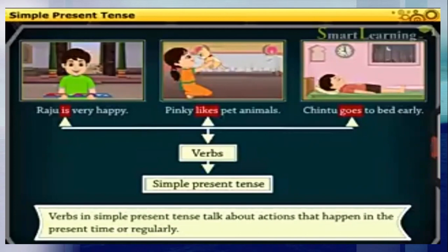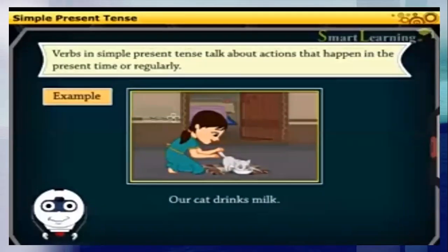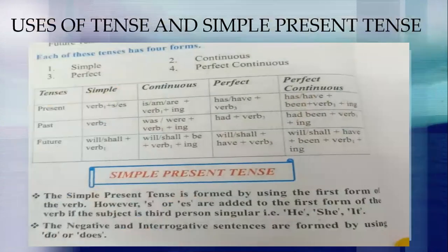For example, 'the man digs' means the work is going on in the present. Other examples: Raju is very happy; Pinky likes pet animals; Chintu goes to bed early. These are examples of simple present tense. The simple present tense talks about actions that happen in the present time or regularly.